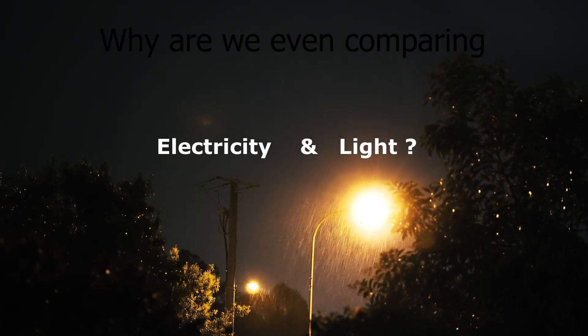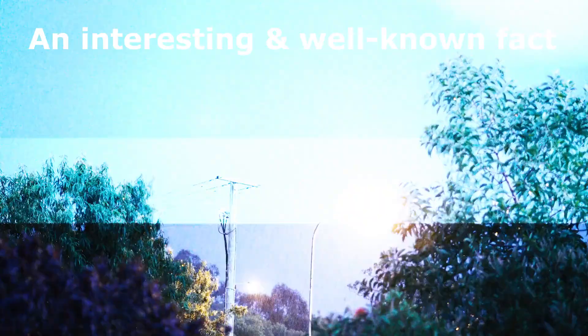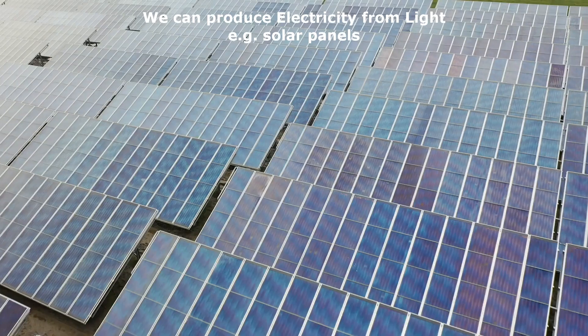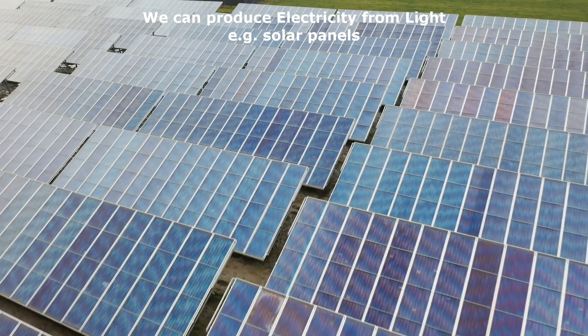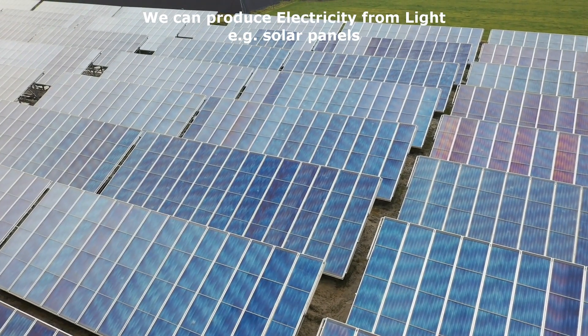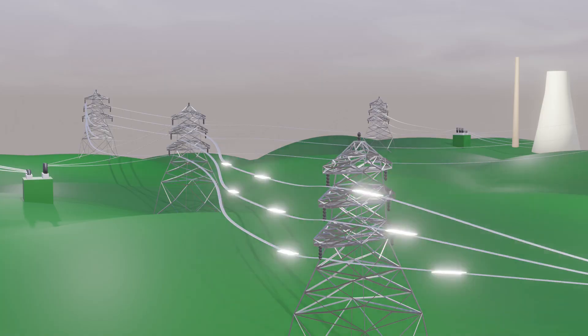You must be thinking why are we even comparing light and electricity. An interesting and well-known fact is that we can produce light using electricity, for example, our household lamps, or we can produce electricity from light, for example solar panels, which produce electricity from sunlight. Both light and electricity are energies, just in different forms.